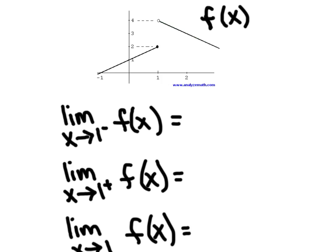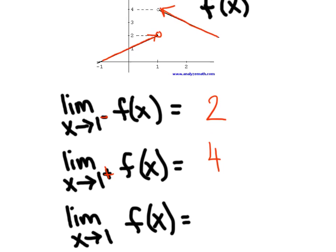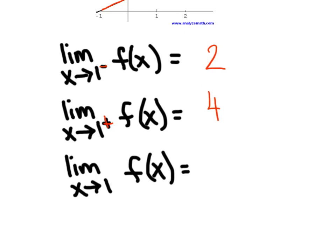As we approach 1 from the left side, I'm going to jump on the graph and approach it this way. We're heading towards a height of 2. This graph actually did achieve a height of 2, but that was irrelevant. Even if that was an open circle, I'd still say 2. As we approach 1 from the right side, I'm traveling this way and we're approaching an intended height of 4. It never did reach 4, but that doesn't matter. The overall limit here is we're going to say it does not exist for the simple reason that the limit from the left did not equal the limit from the right.